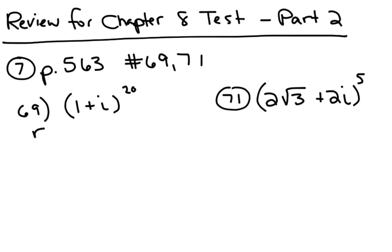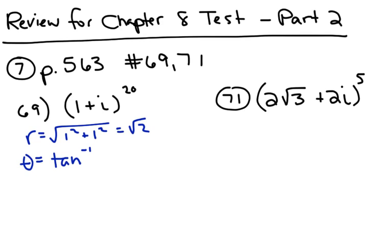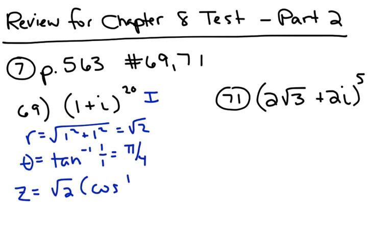r is just the square root of 1 squared plus 1 squared, so it's the square root of 2. Theta is going to be the inverse tangent of 1 over 1, which is pi over 4. Since this complex number is in quadrant 1, pi over 4 is the angle I'm going to use. So z equals square root of 2 times cosine of pi over 4 plus i sine of pi over 4.